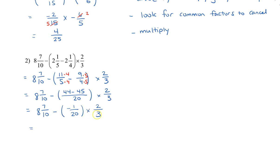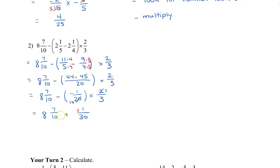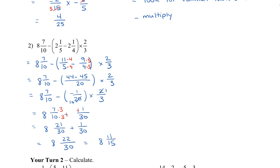Now we're going to multiply next because that's the order of operations. We can see that we can reduce: 2 becomes 1 and 20 becomes 10. And we get 8 and 7 tenths minus negative 1 over 30. We have two negative signs, so let's change them to plus. We multiply by 3 to get a common denominator of 30, giving us 8 and 21 over 30 plus 1 over 30, which is 8 and 22 over 30. We reduce that to get 8 and 11 over 15. And that's how we use order of operations with fraction questions.